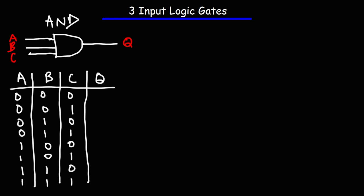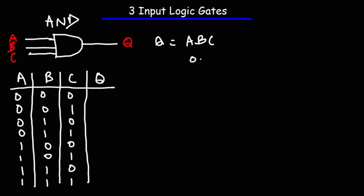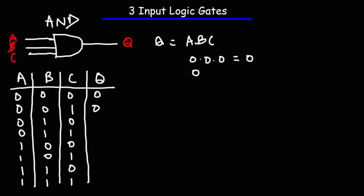The formula for the three-input AND gate is Q = A × B × C. If you multiply three zeros, 0 × 0 × 0 = 0, so that's the output. For the next row, 0 × 0 × 1 = 0. The only time the output is going to be a 1 is if all inputs are active: 1 × 1 × 1 = 1.